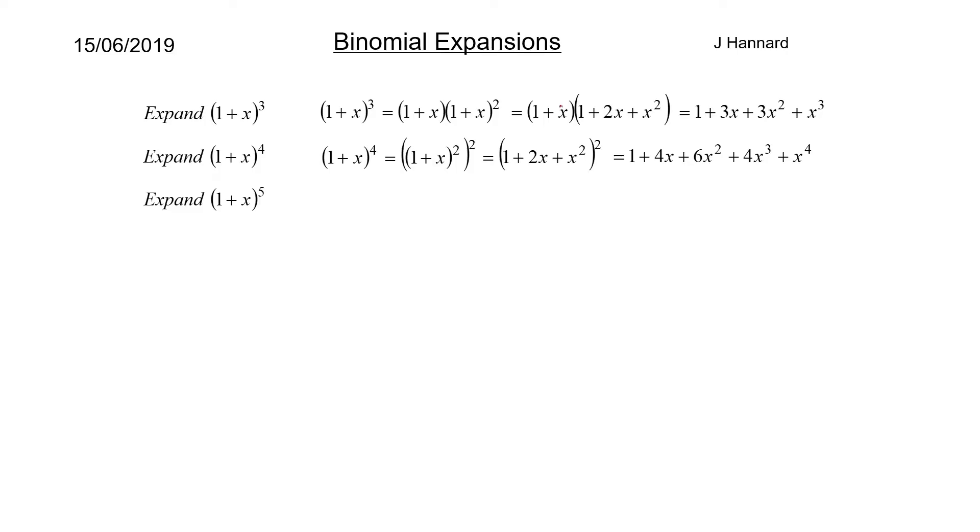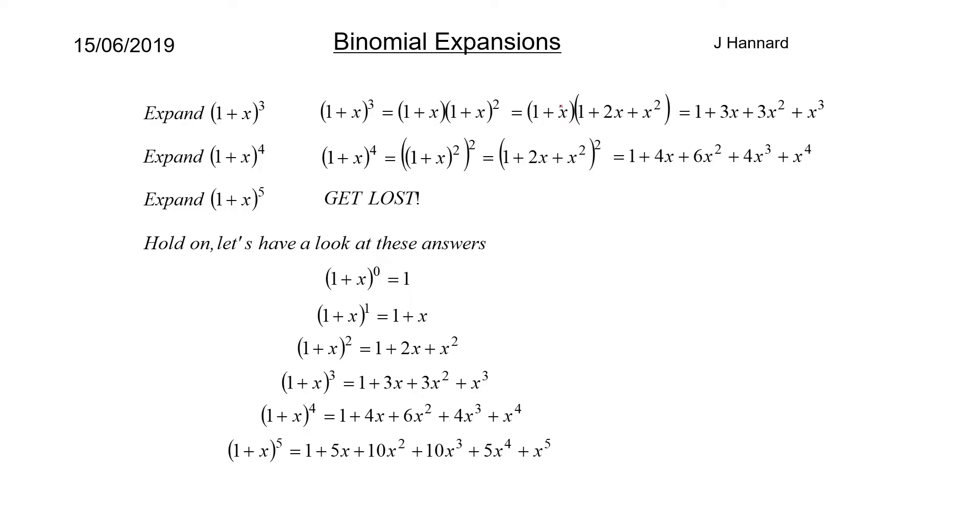Now then, 1 plus x to the 5 - get lost, can't be bothered. Hold on, let's have a look at these answers. We've got 1 plus x to the 0 is 1, to the 1 is 1 plus x, squared is 1 plus 2x plus x squared, cubed is 1 plus 3x plus 3x squared plus x cubed, to the 4 is 1 plus 4x plus 6x squared plus 4x cubed plus x to the 4, and actually to the 5 is that.